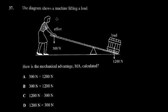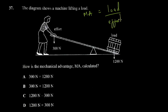Question 37 says the diagram shows a machine lifting a load. The machine here is the lever — this woman is not the machine. So how is the mechanical advantage calculated? MA equals load over effort.